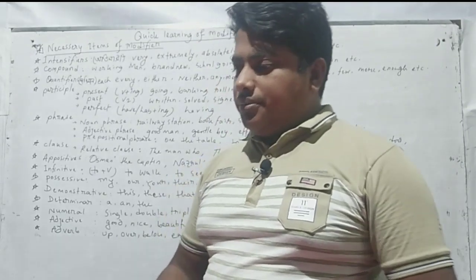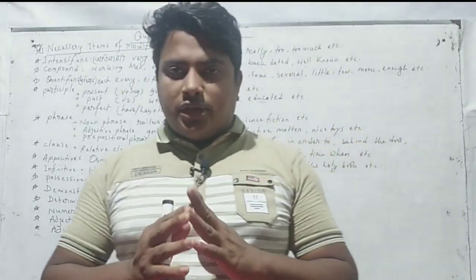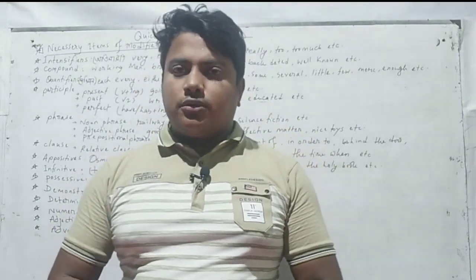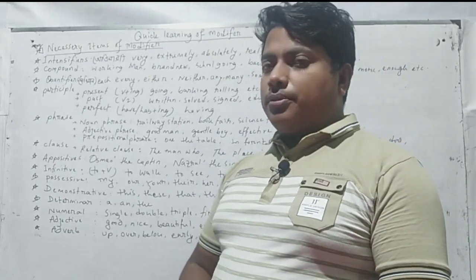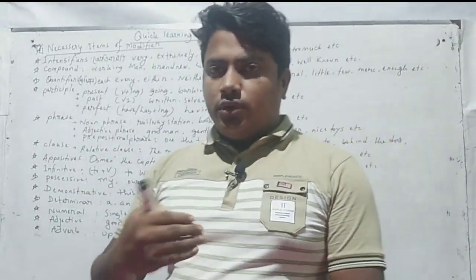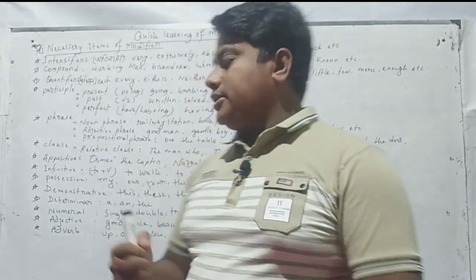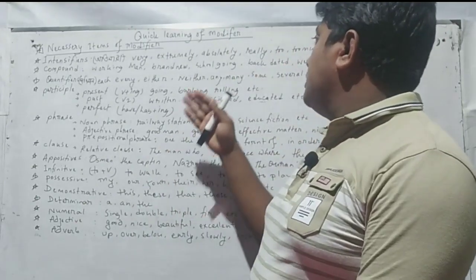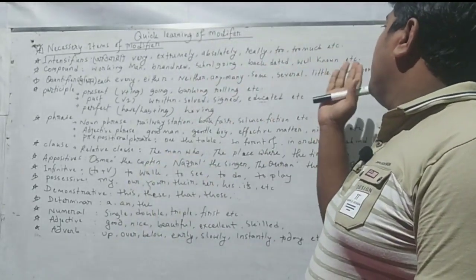Thirdly, compound modifiers. A compound modifier comes together and forms a compound. For example, 'working man' is a compound. 'Brand new' is a compound modifier. Other examples include: school-going, backdated, well-known. These are all compound modifiers.